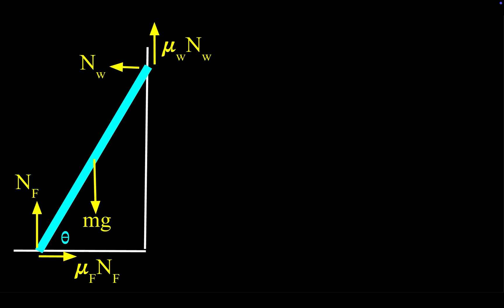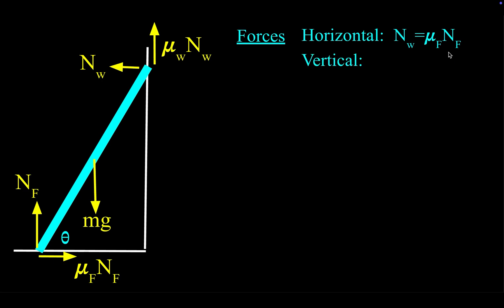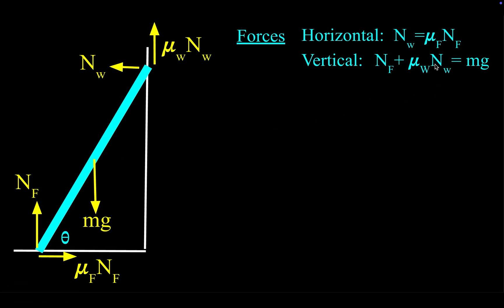Now let's look at the forces in a static situation. The horizontal forces will balance: the normal force to the left will be balanced by the friction force on the floor to the right. The vertical forces also balance — there are two upward forces, which are the normal force from the floor and the friction force from the wall, and those balance the downward force of mg. So those are our two force balance statements for horizontal and vertical equilibrium.